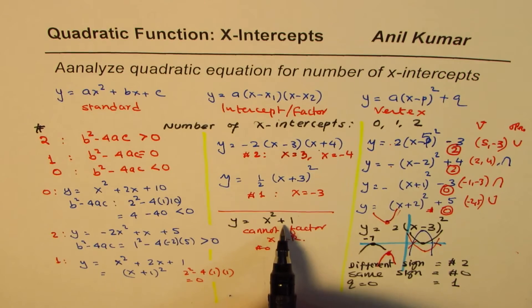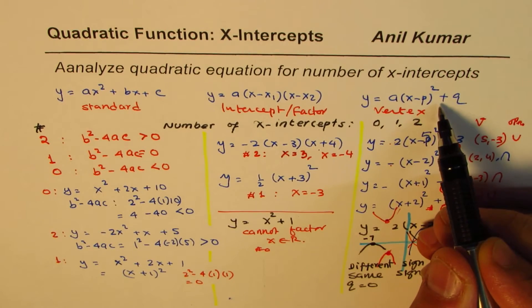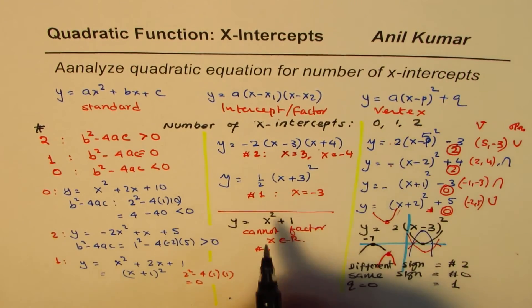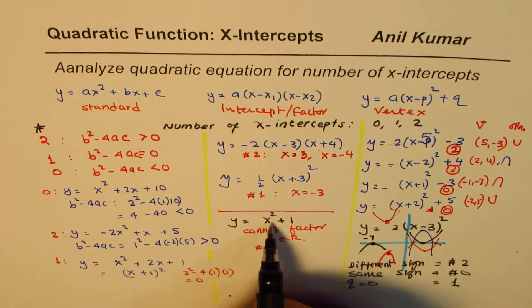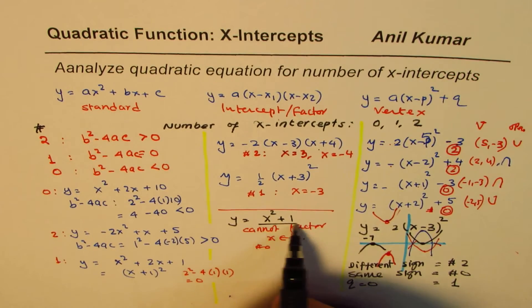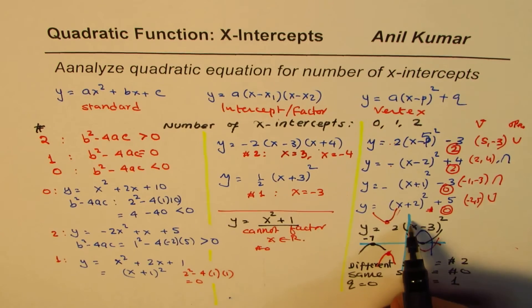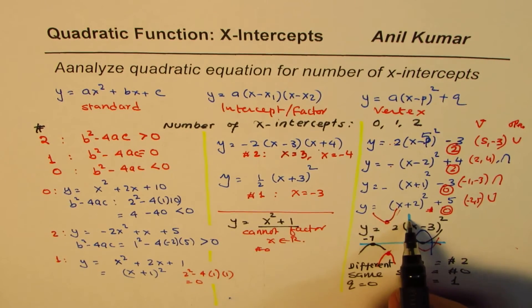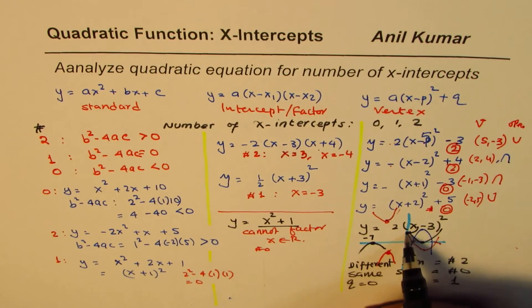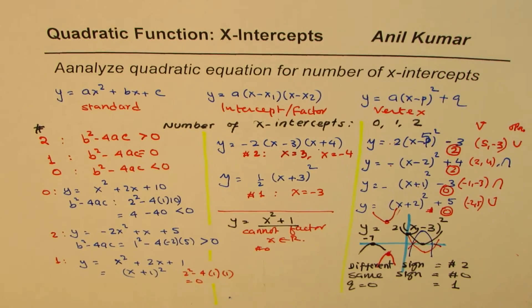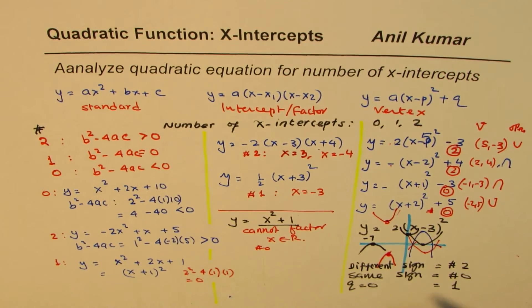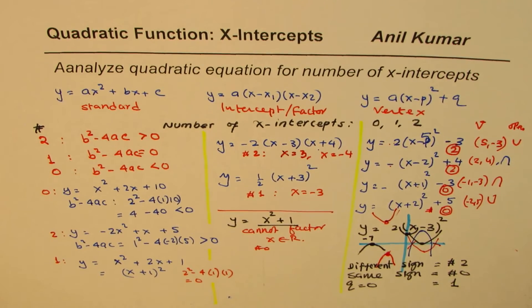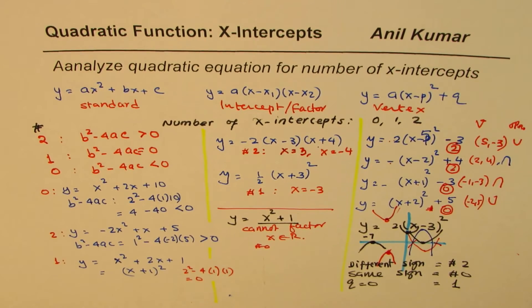You can also treat x² + 1 as vertex form: it has a vertex at (0, 1) and opens upwards from above the x-axis, confirming 0 x-intercepts.